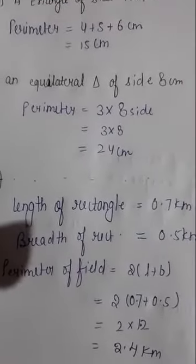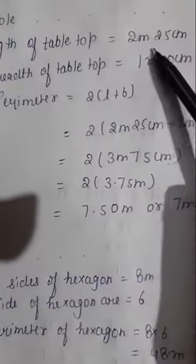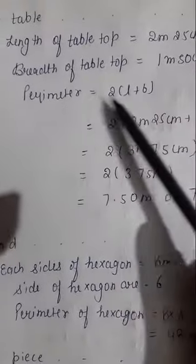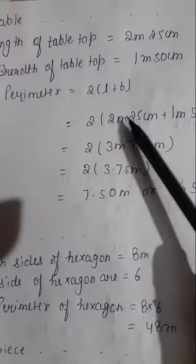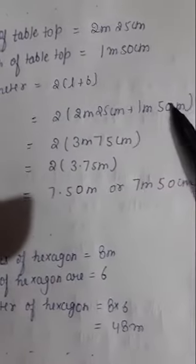will be 2.4 kilometer. Next, question number 7. Length of table top is 2 meter 25 centimeter, breadth 1 meter 50 centimeter. Perimeter equals 2(l plus b). Now we put here l equals 2 meter 25 centimeter, b equals